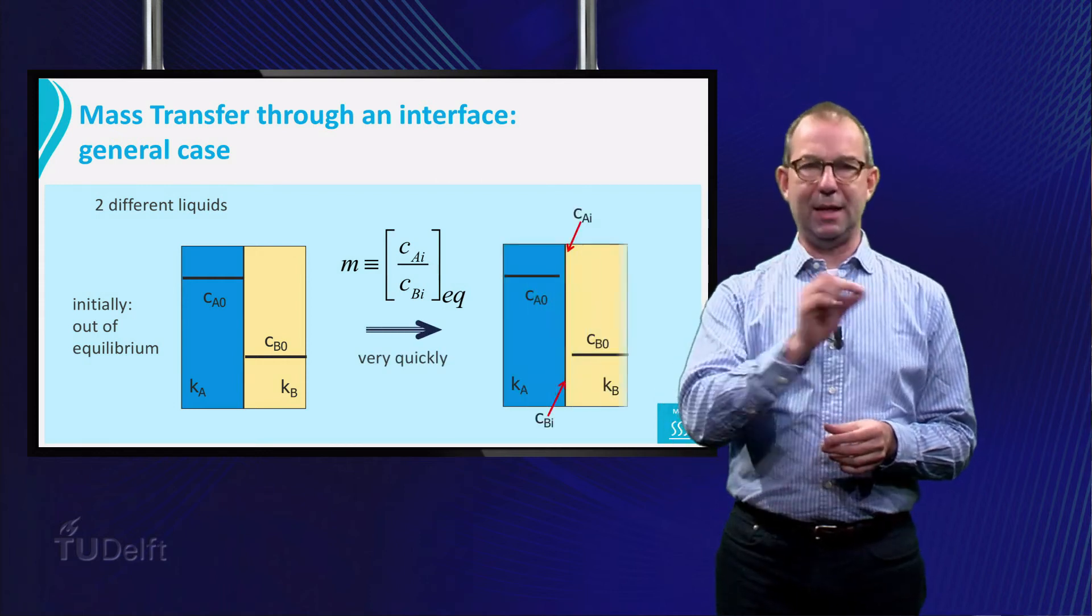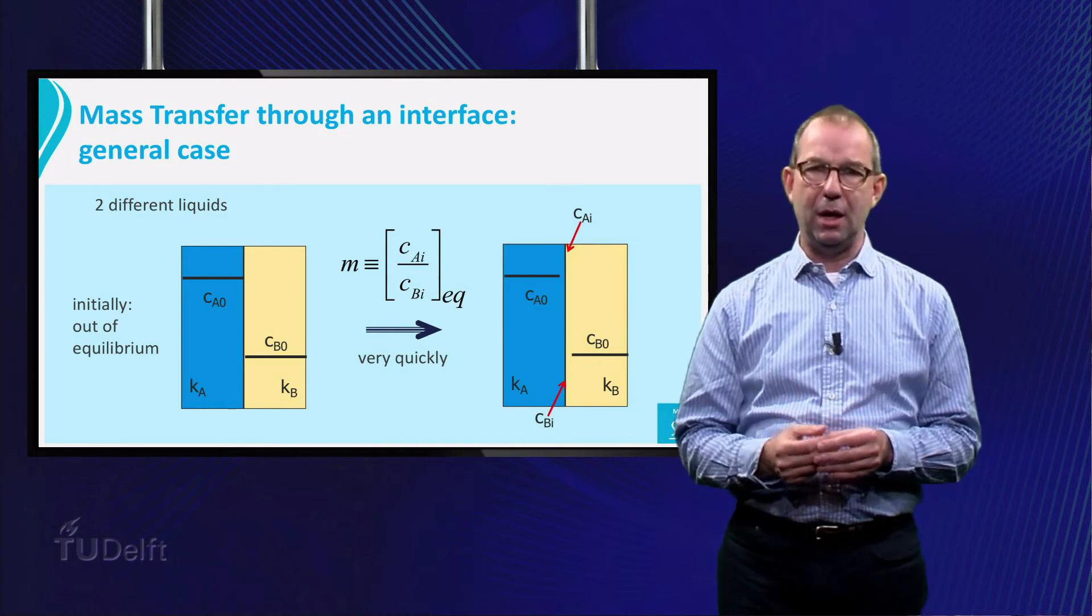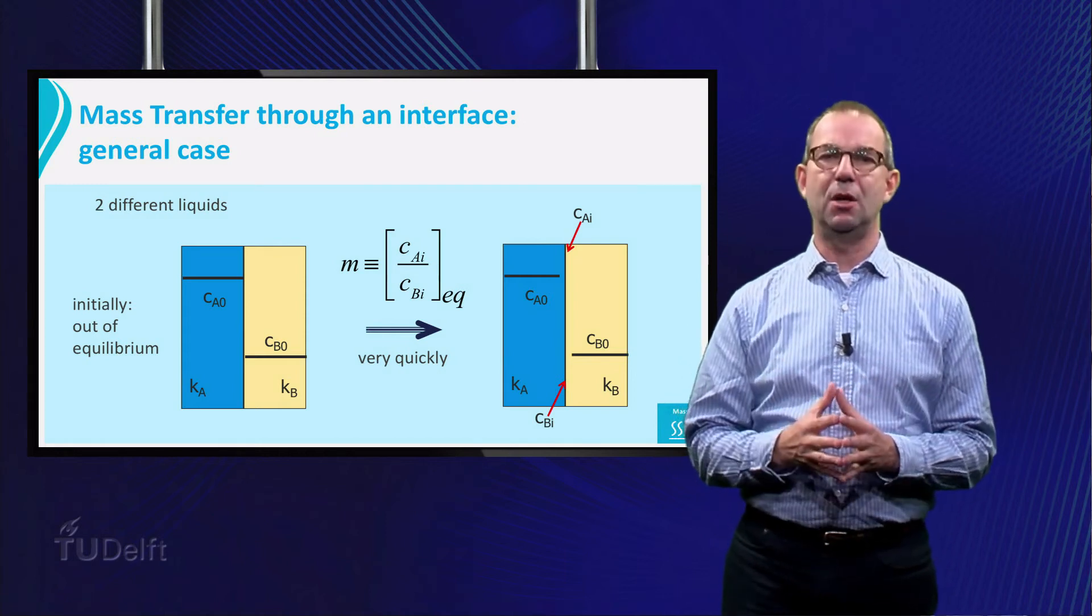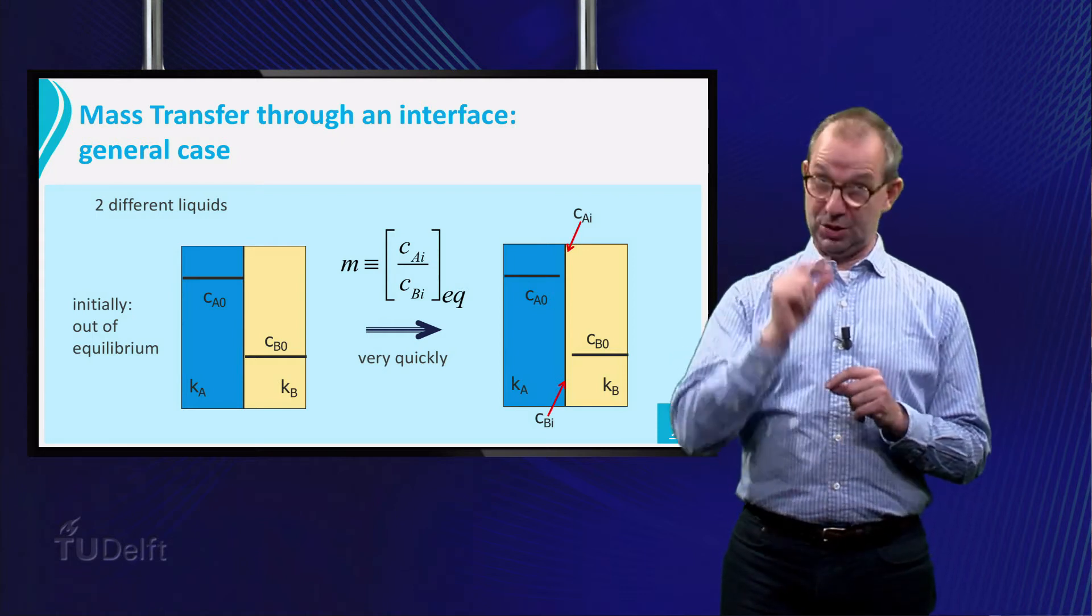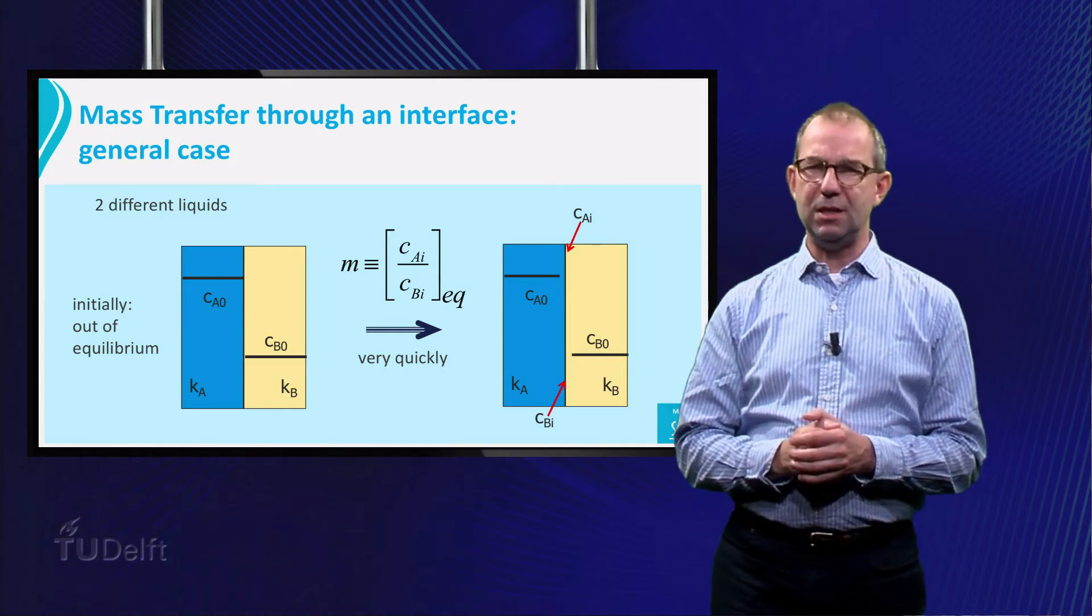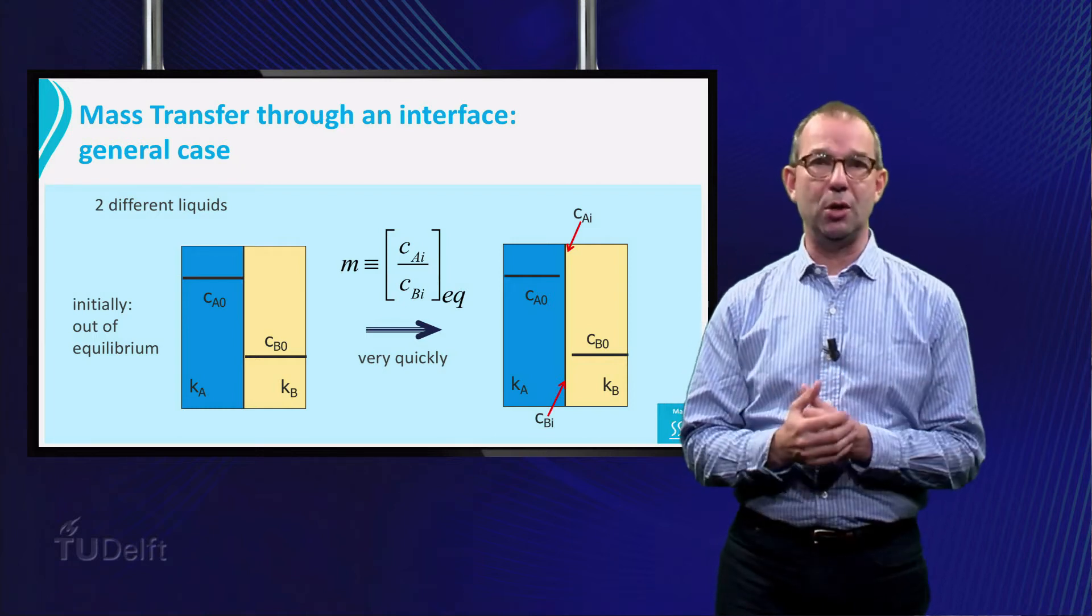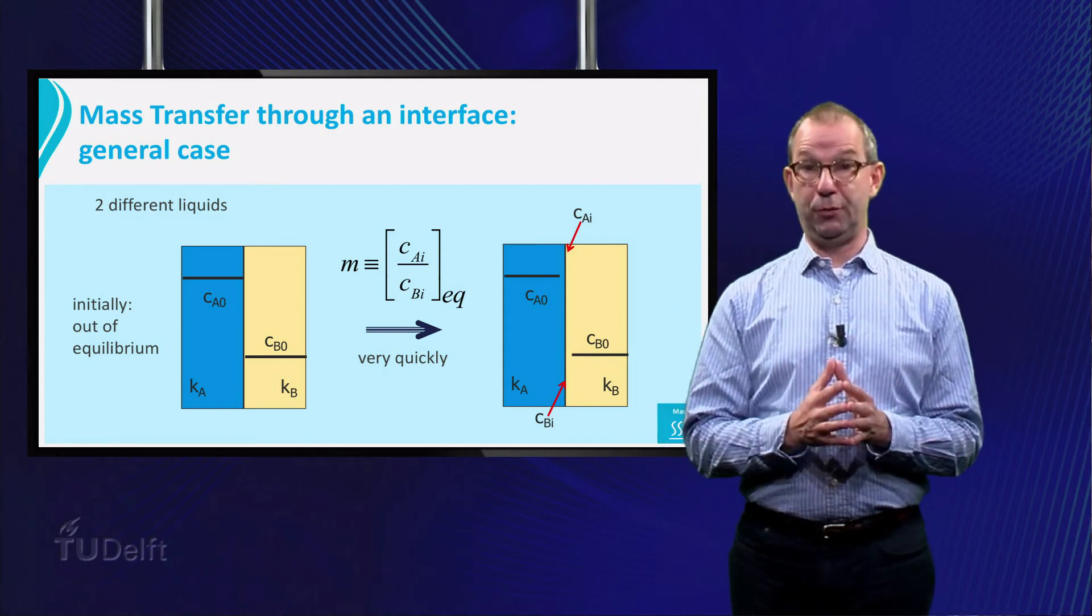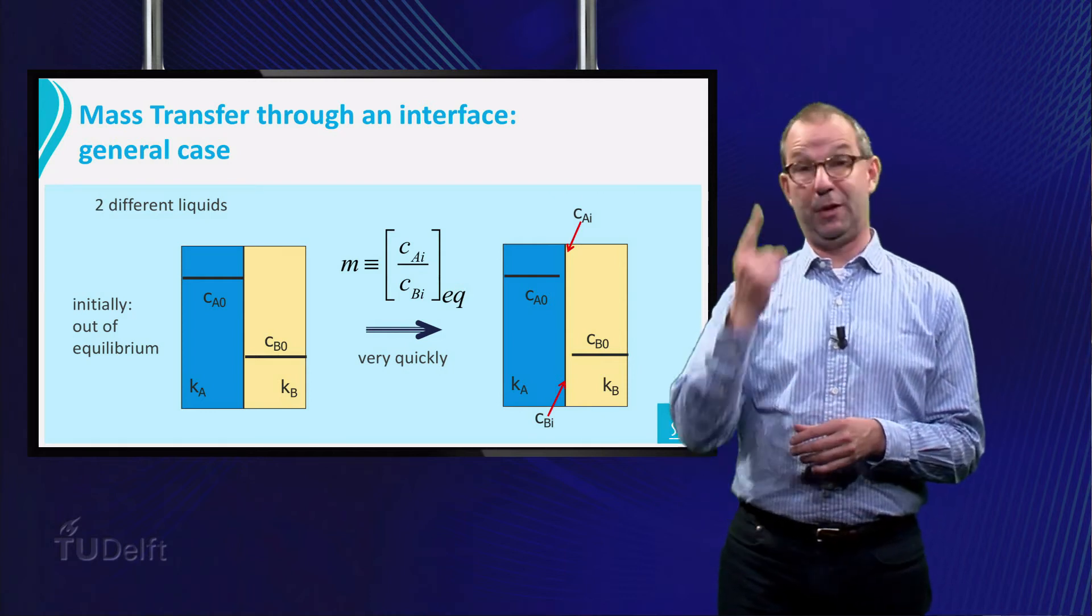Molecules directly at the interface on each side feel a strong force to rearrange themselves. And within a very short time, the concentrations at the interface will jump to new values such that their ratio is the partition coefficient. This is shown in the figure. Note that the interface concentration in the A phase is even higher than it was. That is very well possible, as in the final situation, more of the dissolved substance can be in the A phase. Why not? If the M value is very high.